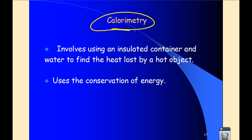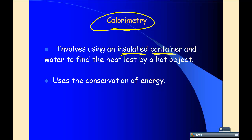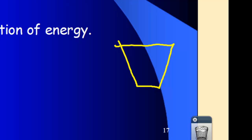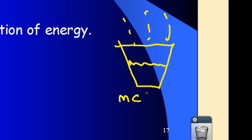We're going to talk about calorimetry, which involves some kind of insulated container — something as simple as a styrofoam coffee cup. It's not perfectly insulated, but it will have some water in it. You know the mass of the water, the specific heat of the water, and if you have a thermometer, you can measure the final and initial temperature of the water. So basically, you can calculate how much heat is held by that water inside that container.